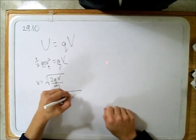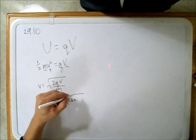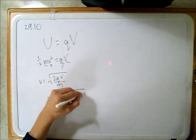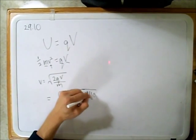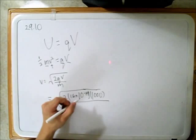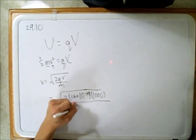We have our potential difference of a thousand, all over the mass, which is 9.11 times 10 to the negative 31 kilograms.